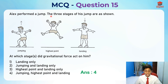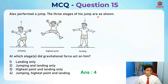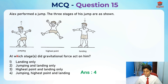Alex performed a jump. This is Alex and he performed a jump. The three stages of his jump are shown. First he jumped, then he reaches the highest point, and then he lands. At which stage or stages did gravitational force act on him?